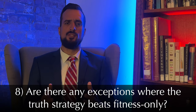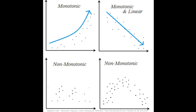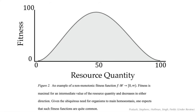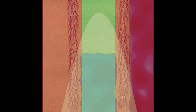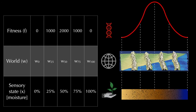Number eight: are there any exceptions where the truth strategy beats fitness-only? Truth and fitness-only can tie when the resources are perfectly correlated to fitness. The only condition where truth has a chance to survive is if the fitness function is monotonic. If there are any non-monotonic functions, truth goes extinct. It's important to note that this probably never occurs in our world—most fitness functions are non-monotonic. There's a Goldilocks zone of optimality, and resources are likely never perfectly one-to-one correlated with fitness.